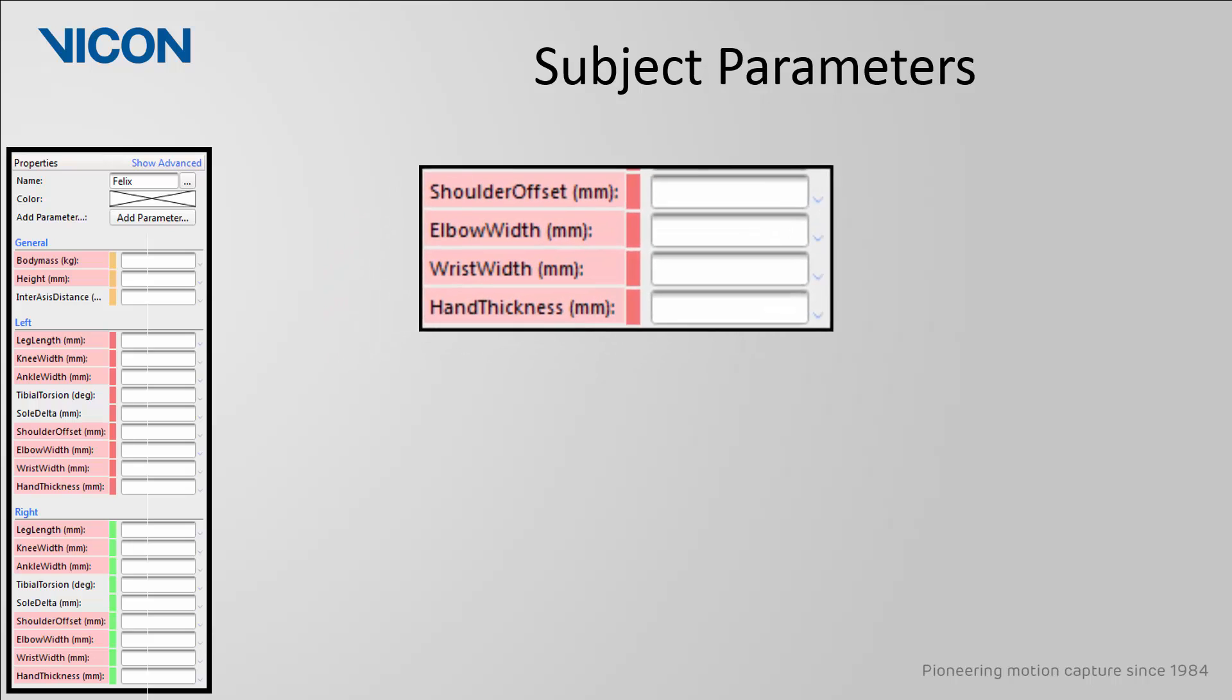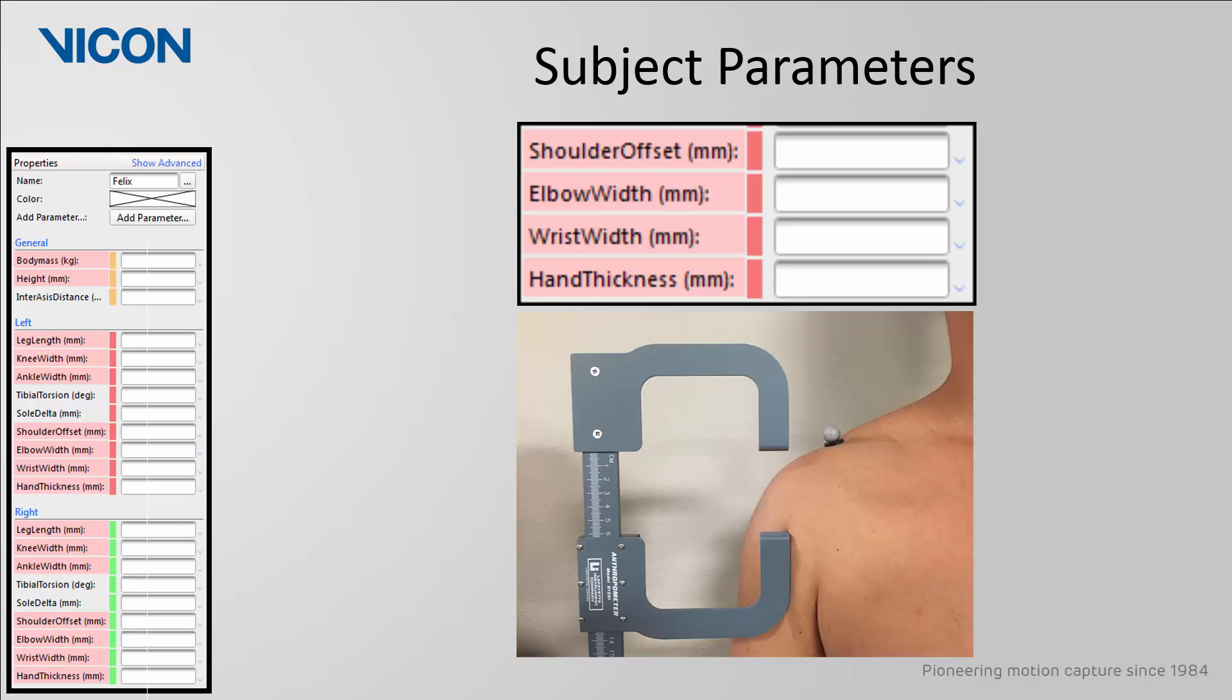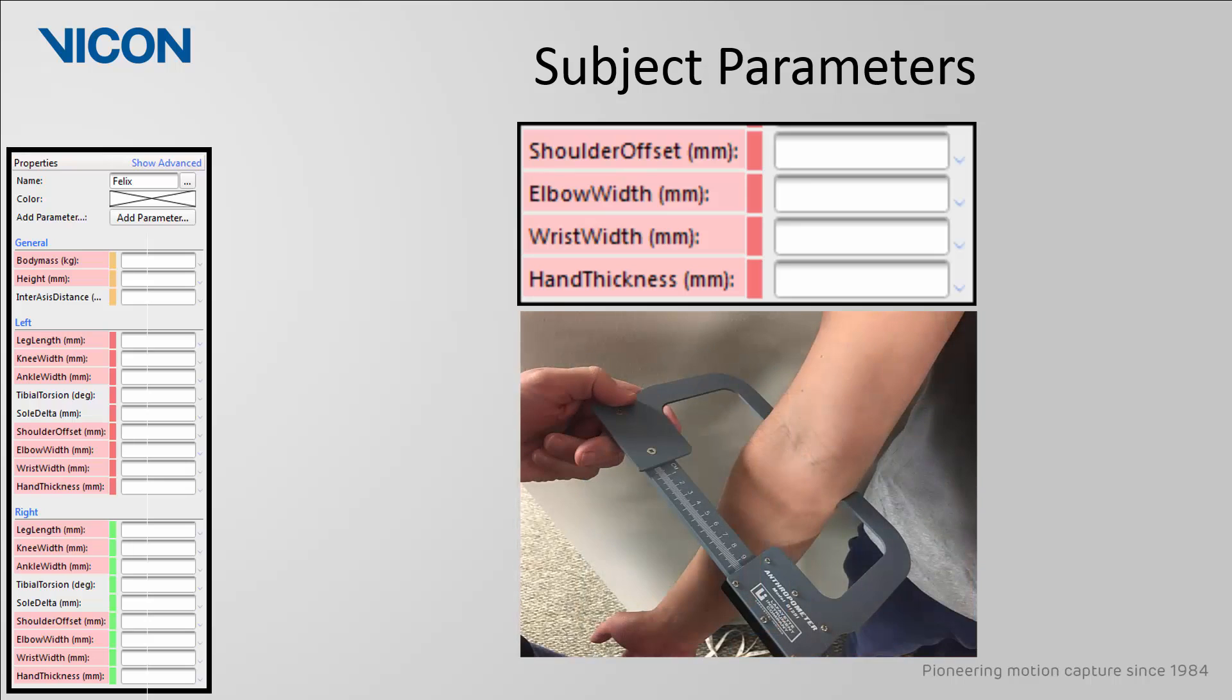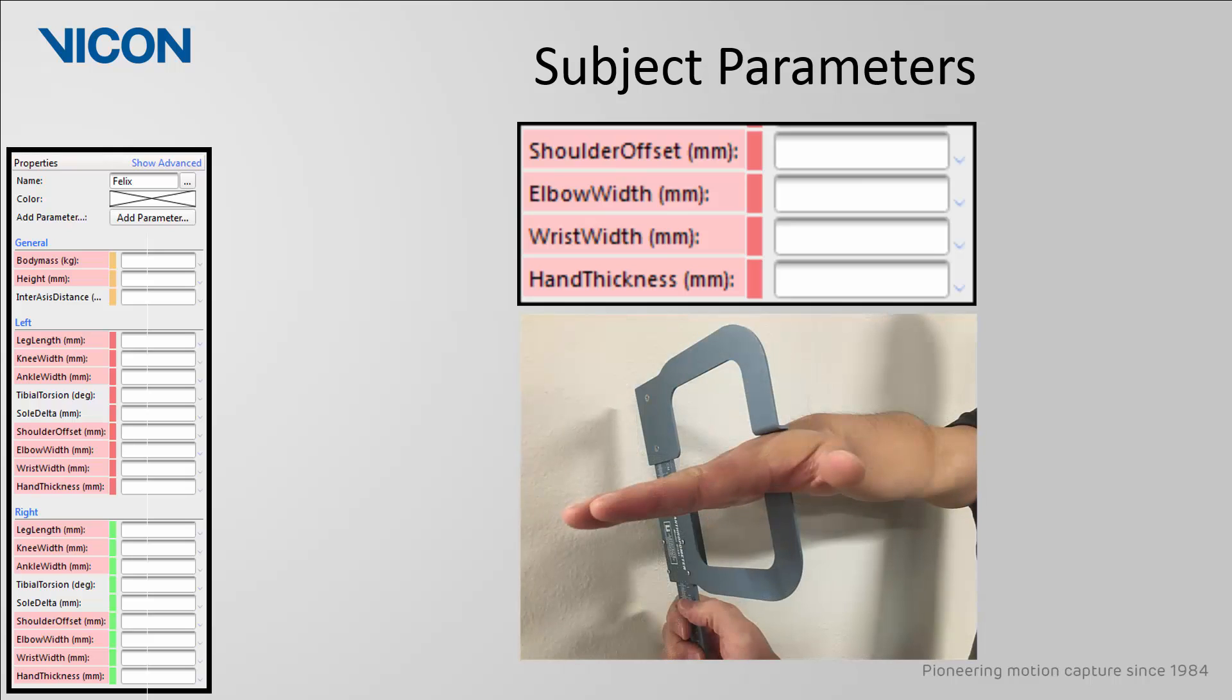The last measurements relate to the upper body and all require the use of calipers. The shoulder offset is the vertical offset from the base of the shoulder marker to the shoulder joint center. The elbow width is measured as the distance between the medial and lateral epicondyles of the humerus. The wrist width is the anterior-posterior distance of the wrist at the position where a wrist marker bar is attached. If the wrist markers were attached directly to the skin, then this value should be set to zero. Lastly, hand thickness is measured as the anterior-posterior thickness between the dorsum and palmar surfaces of the hand.